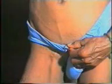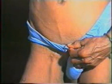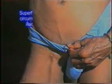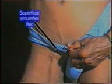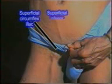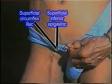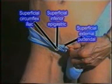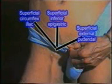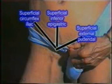Now look for dilated veins over the lower abdomen above the inguinal ligament converging onto the saphenous opening. These are the superficial circumflex iliac, superficial inferior epigastric and superficial external pudendal veins, which enter the long saphenous vein just before it joins the femoral vein.